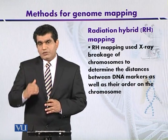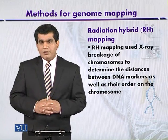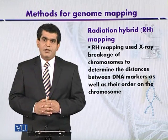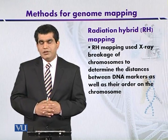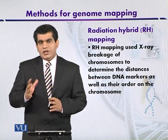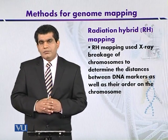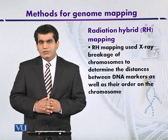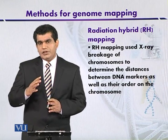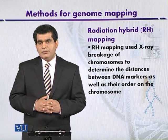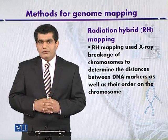RH Mapping, or Radiation Hybrid Mapping, is a modification of genetic linkage mapping. In genetic linkage mapping, frequencies are measured on the basis of recombination, where chromatids are exchanged. But in RH Mapping, chromatids are not exchanged due to the lack of meiosis; instead, the DNA is directly broken by exposure to radiation.